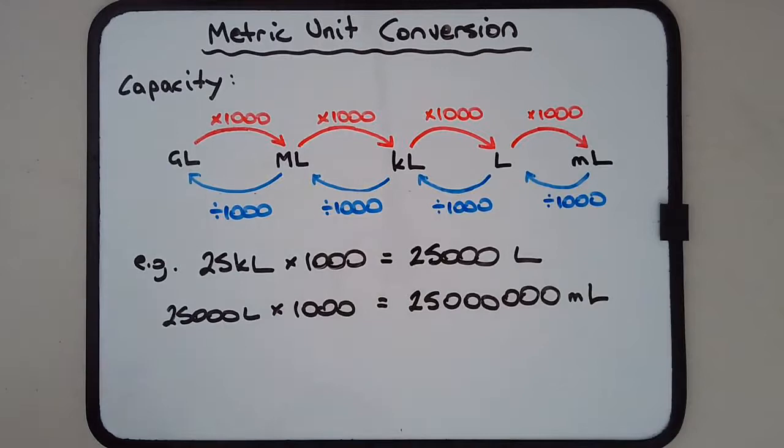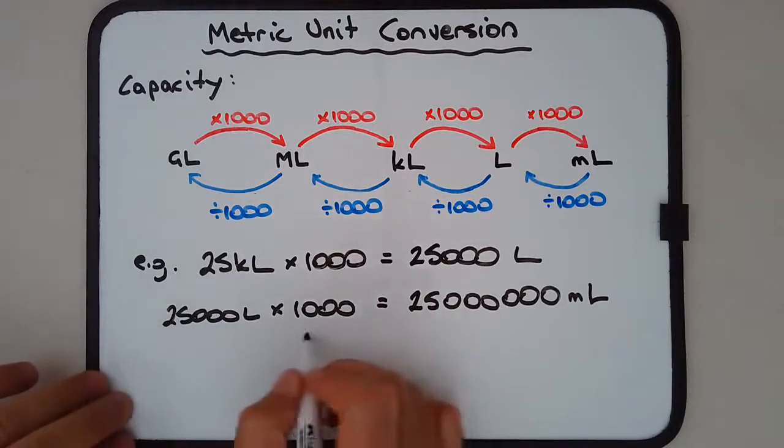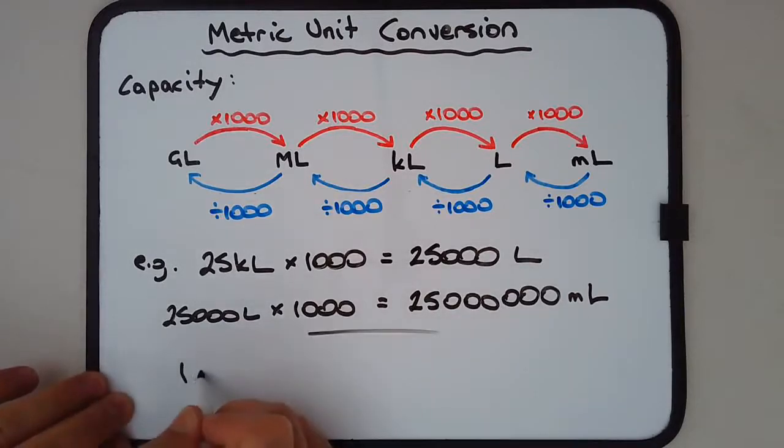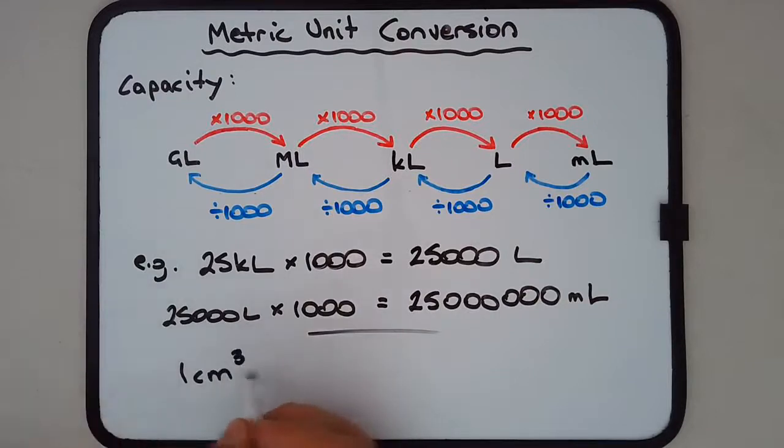One other thing I want to point out is the conversion between volume and capacity. There'll be a separate video on that, but it's interesting to note that one cubic centimeter, the size of a small dice, is equal to one milliliter.